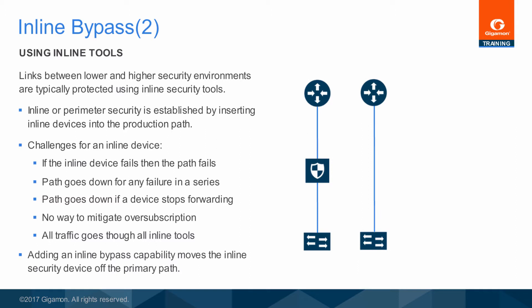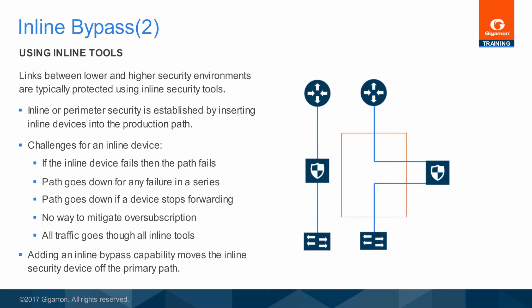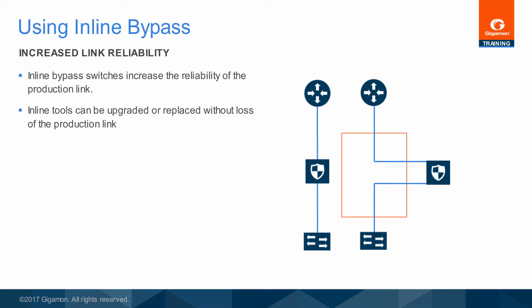When an inline bypass switch is added to the configuration, the inline security or perimeter security device is moved away from the production path. The first way in which inline bypass helps is in maintaining access through the production link. Most organizations would prefer to keep the production link operating without security while security is being restored, rather than have the link go down. When an inline bypass switch is present, tools can be maintained or replaced while traffic is forwarded through the production link uninspected. A simple command places an inline tool in logical bypass, so traffic continues through the production link and is not forwarded to the problem inline tool.